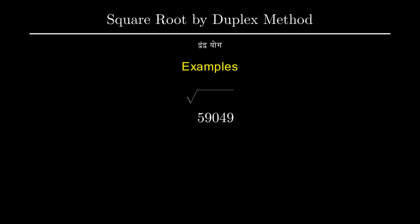Our next example is 59049. Since n equals 5 is odd our starting number will be the left most digit of the number.